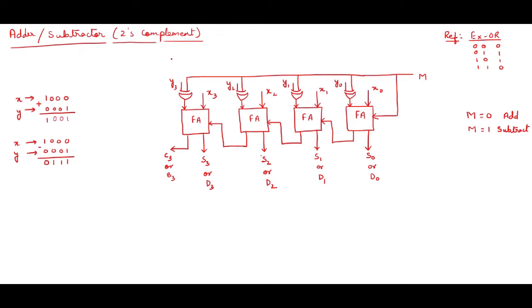Subtractor means it operates in 2's complement form. You can see that in place of a and b, just like in a parallel adder, I have taken x and y to avoid confusion, because borrow is b3, so there would be confusion. So I have taken x and y in place of a and b.